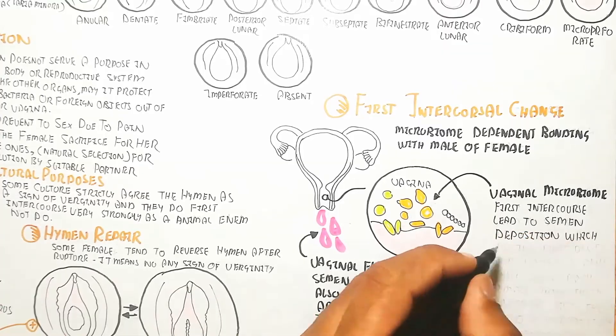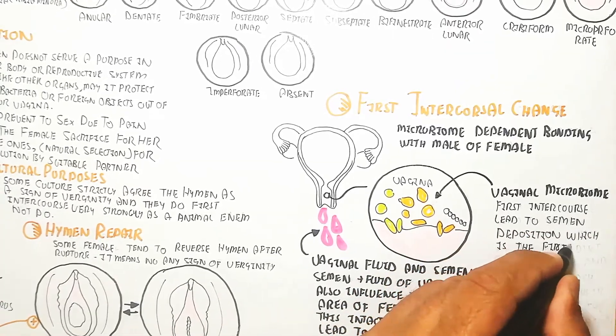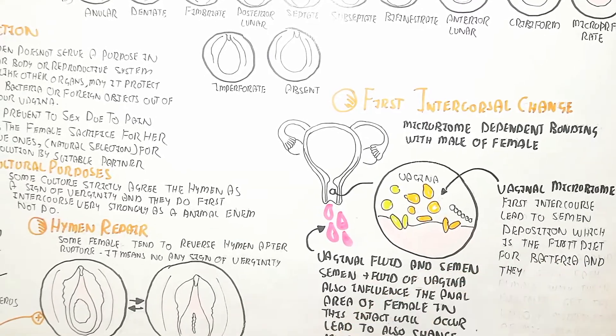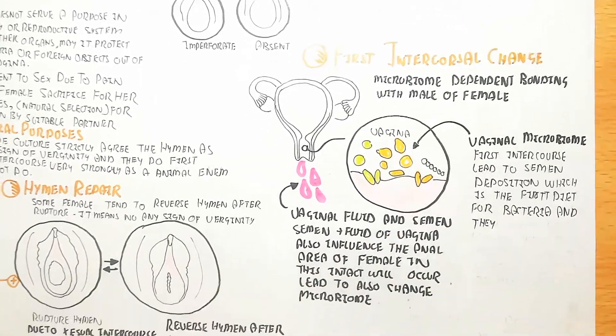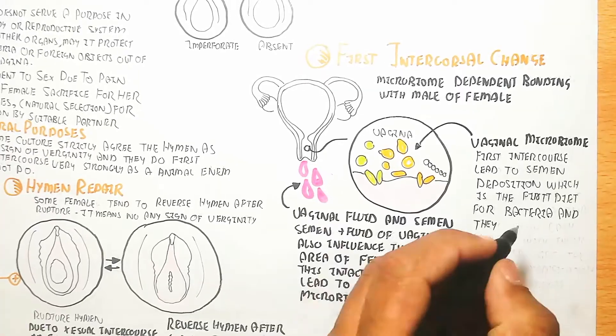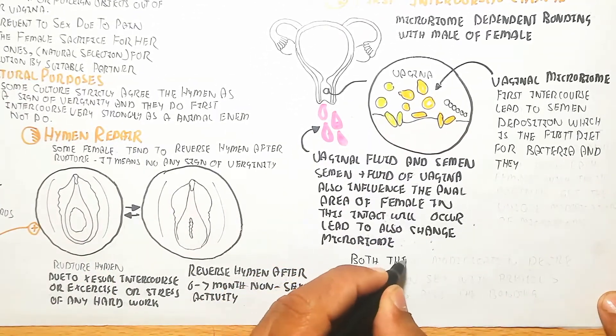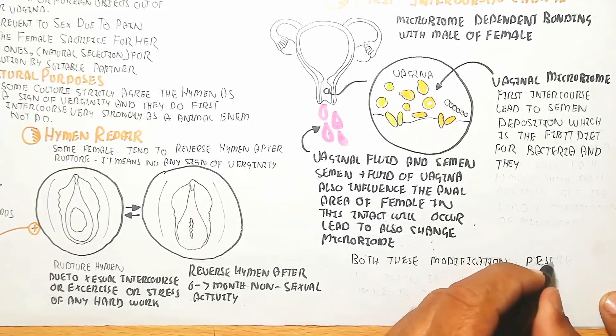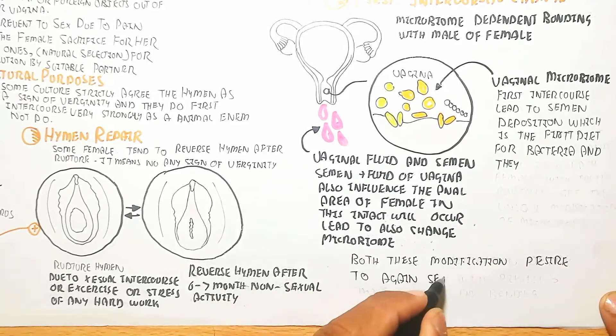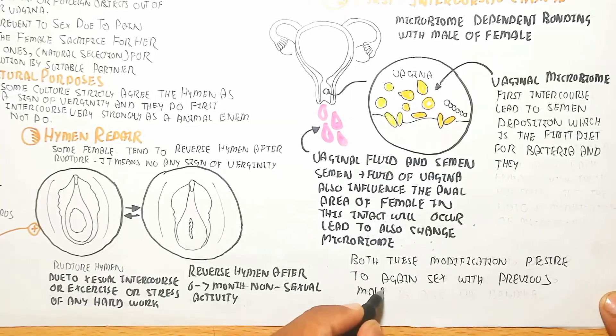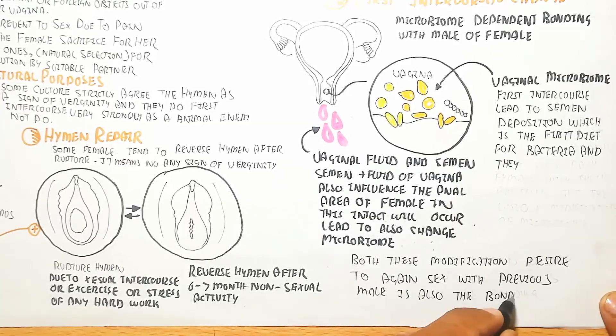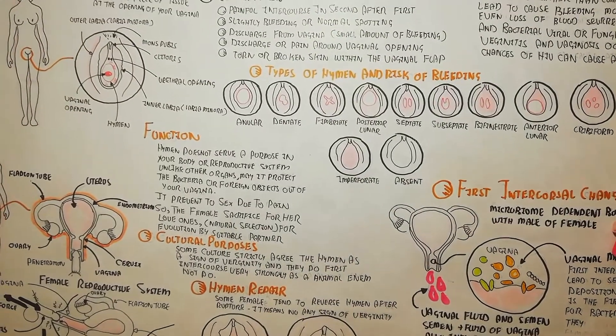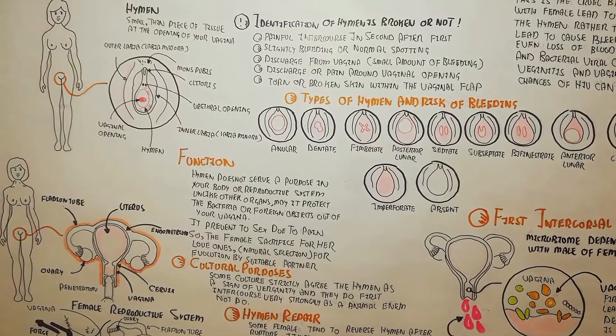The first intercourse leads to semen deposition, which is the first diet for bacteria. They feed and require more. This modification creates a desire to have sex again with the previous male, which is also bonding. When you use protection, the microbiome changes will decrease, but the female vaginal fluid will still tend to change the microbiome.